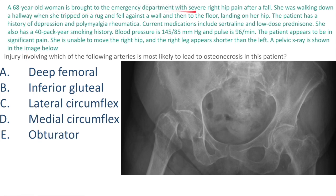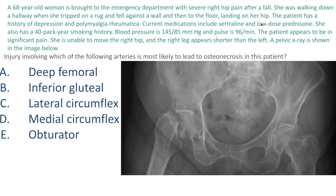Moving on to the next question. A 68-year-old woman is brought to the ER with severe right hip pain after a fall. She was walking down the hallway when she tripped on a rug and fell against the wall onto her hip. Looking at the X-ray first, you can see her right hip is fractured. The patient has a history of depression and polymyalgia rheumatica; current medications include sertraline and low-dose prednisone.